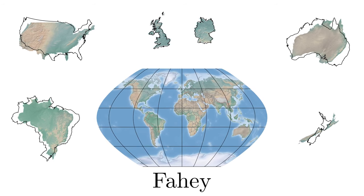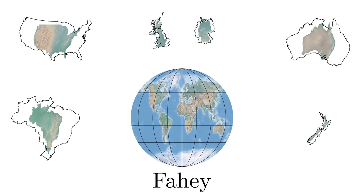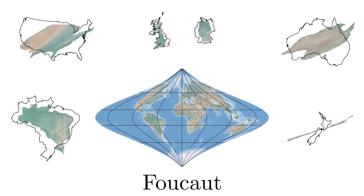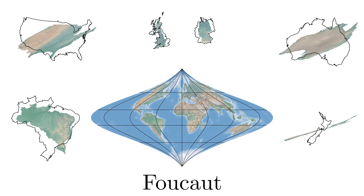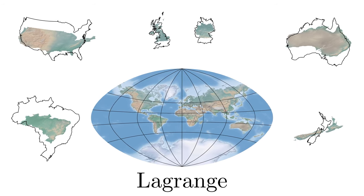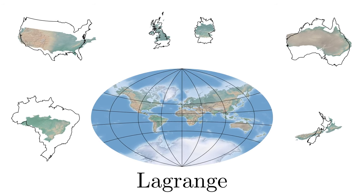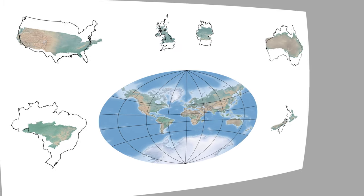Some people — not to be confused with flat earthers — know that the world is round, and therefore a round projection is needed. Other projections may appear of little practical use, but they often have interesting mathematical properties that can be important, especially when comparing smaller map segments.